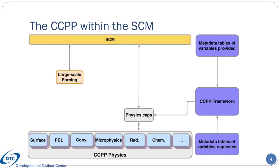For example, there are several different microphysics schemes, convection schemes, etc. One of the keys of the entire CCPP is that each of these physics schemes will have an associated metadata file containing information about what variables are communicated in and out of a physics scheme. They are a complete description of a scheme's data interface in a way that the CCPP framework can understand. Likewise, on the SCM side, there are similar metadata files that describe what variables it can provide to the physics. At model build time, the CCPP framework scripts are invoked to read metadata from the SCM and from the physics to auto-generate a software cap that acts like a custom-made physics driver.